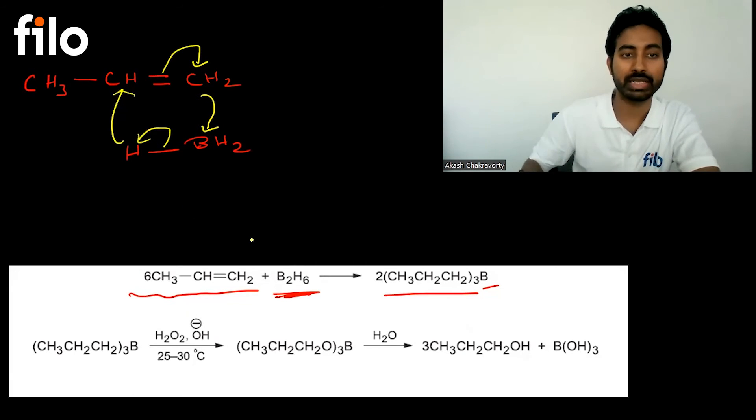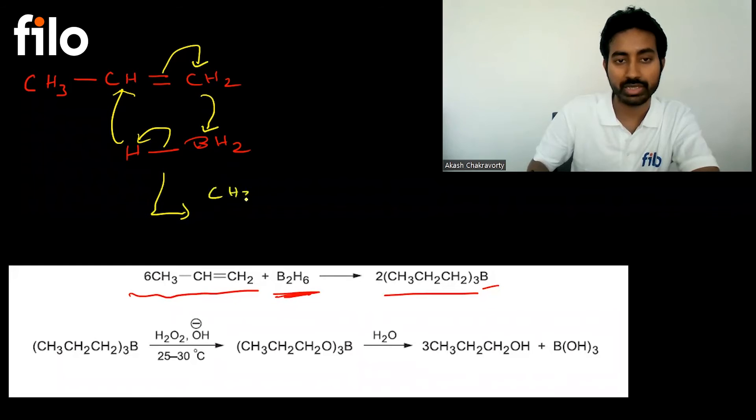The boron-hydrogen bond will attack the carbocation that is generated. If you call it a transition state, it will be something like this: CH3, then CH, then CH2, and then BH2, and then hydrogen. This is the transition state.